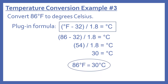Example number three: convert 86 degrees Fahrenheit to degrees Celsius. Here we need the other plug-in formula because we're converting to degrees Celsius. That formula is degrees Fahrenheit minus 32, in parentheses, divided by 1.8.